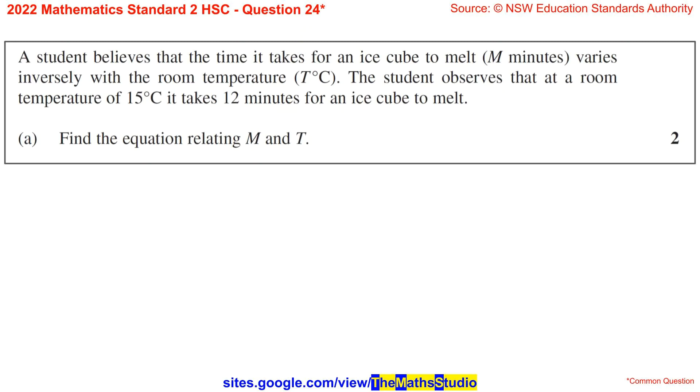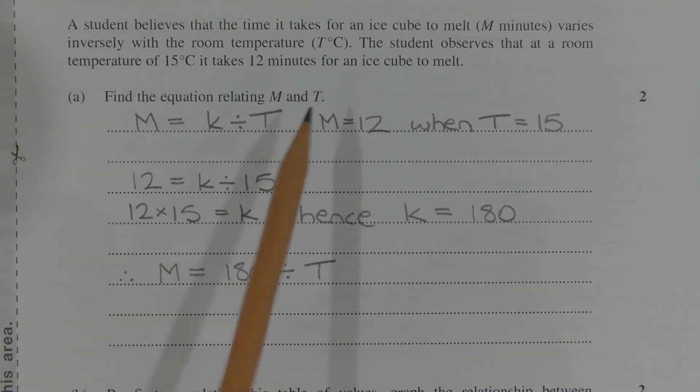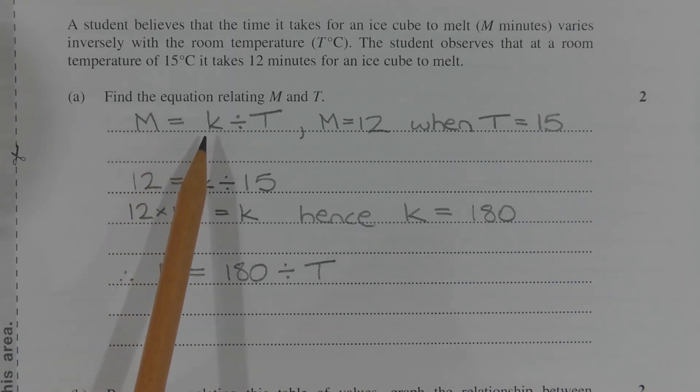Part A. Find the equation relating m and T. The equation relating m and T will be in the form m equals k divided by T, where k is the constant of proportionality.